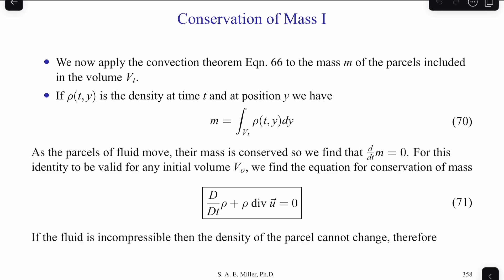Now if that particular fluid parcel is moving, the mass must be conserved so that we find dm/dt is 0. This is just the principle of conservation of mass, that mass cannot be created or destroyed. For this identity to be valid, for any particular initial volume labeled v sub 0, so this is vt when t is 0, then we have v0. And we can find the equation for conservation of mass using the convection theorem.